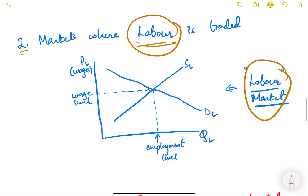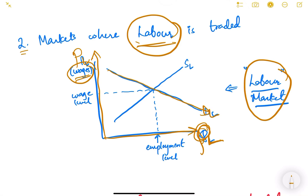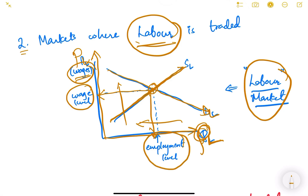The second type is the labor market, where labor is traded. On the x-axis is the quantity of labor demanded and on the y-axis is the price of labor, which is wages or salary. The demand for labor is downward sloping — as wages increase, quantity of labor demanded decreases. The supply of labor is upward sloping — as wages increase, more people want to work. The intersection gives the labor equilibrium point, which defines the wage level and employment level in the market.